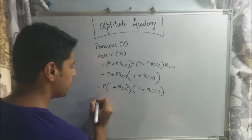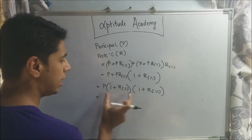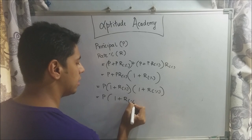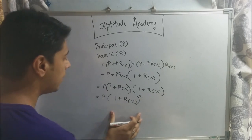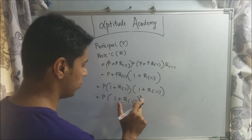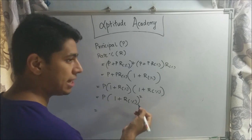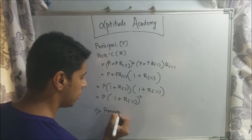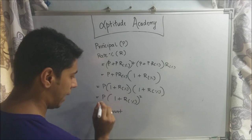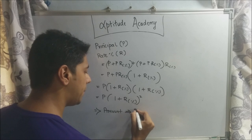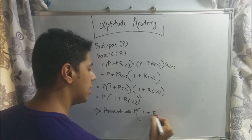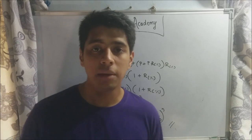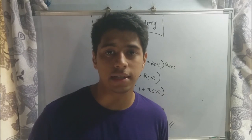For two years we get the term (1 + r%) raised to the power of 2. For n years it will be raised to n. Since r% is r ÷ 100, the amount A after n years for principal P and rate r is: A = P × (1 + r/100)^n.